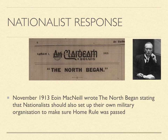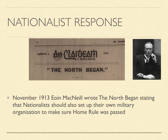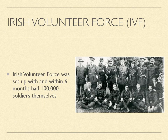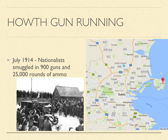With the Unionists taking such extreme measures to prevent Home Rule, nationalists decided they should act. In November 1913, Eoin MacNeill, a nationalist we will discuss again during our episode on cultural nationalism, wrote an article called 'The North Began,' arguing that nationalists should set up their own military organisation to ensure Home Rule was passed. The Irish Volunteer Force was set up almost immediately, and by mid-1914 they had almost 100,000 volunteers. They also smuggled arms into the country in 1914 — a much smaller amount of around 900 guns and 250 rounds of ammunition.